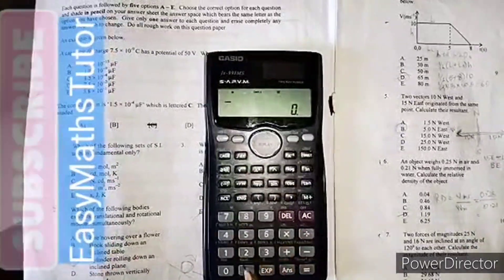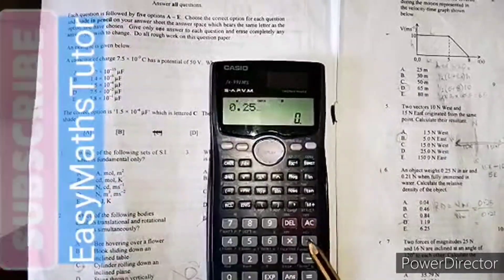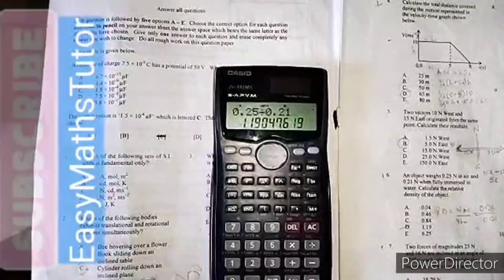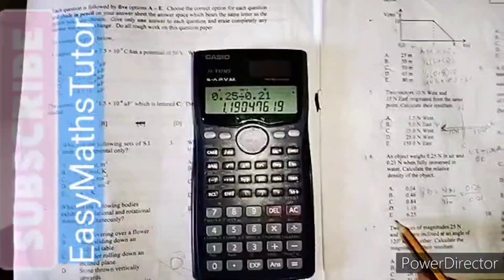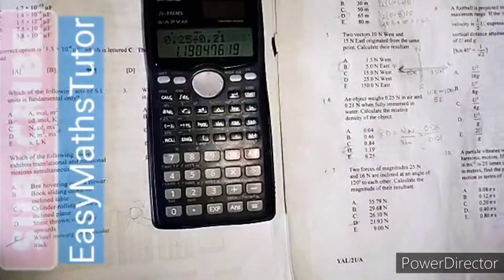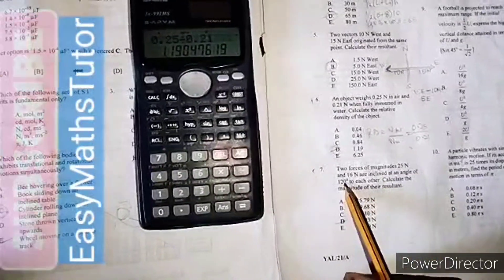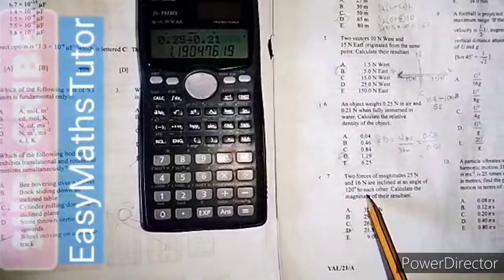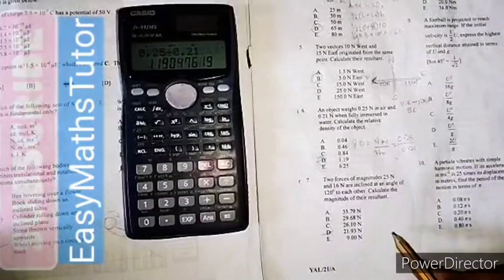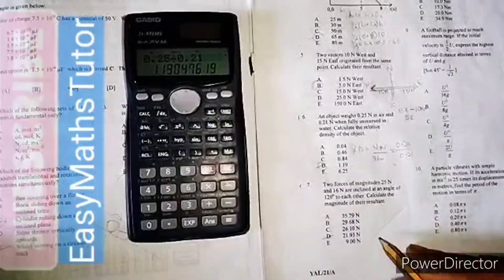Number seven: Two forces of magnitude 25 newton and 16 newton are inclined at an angle of 120 degrees to each other. Calculate the magnitude of their resultant. We're going to use a diagram.